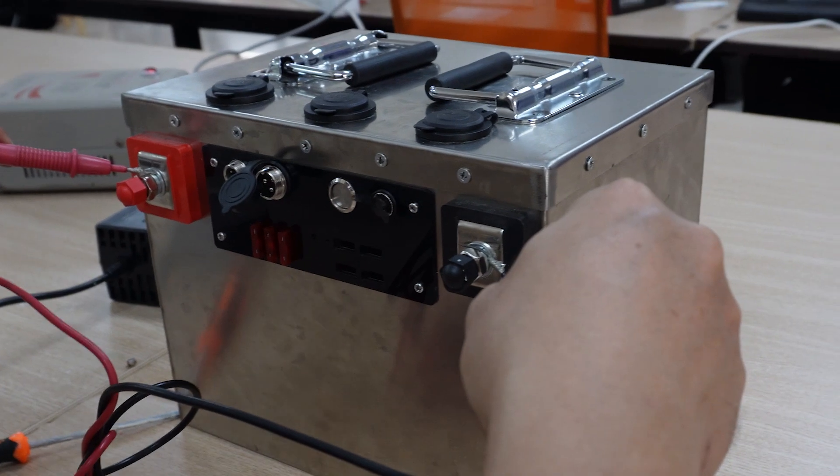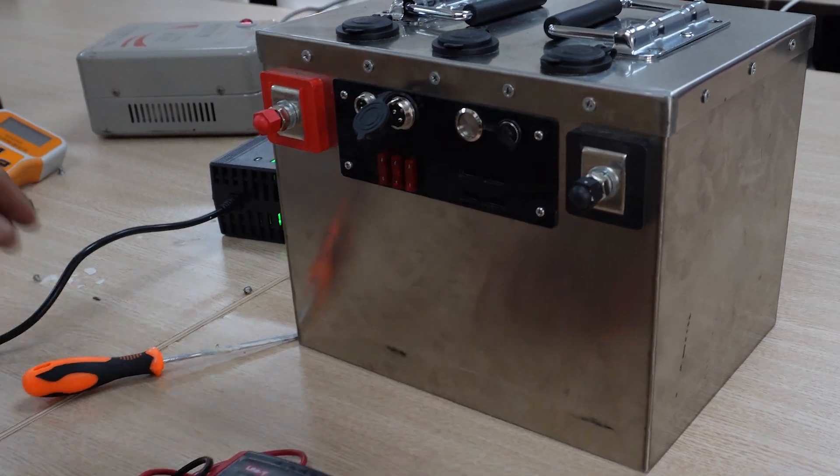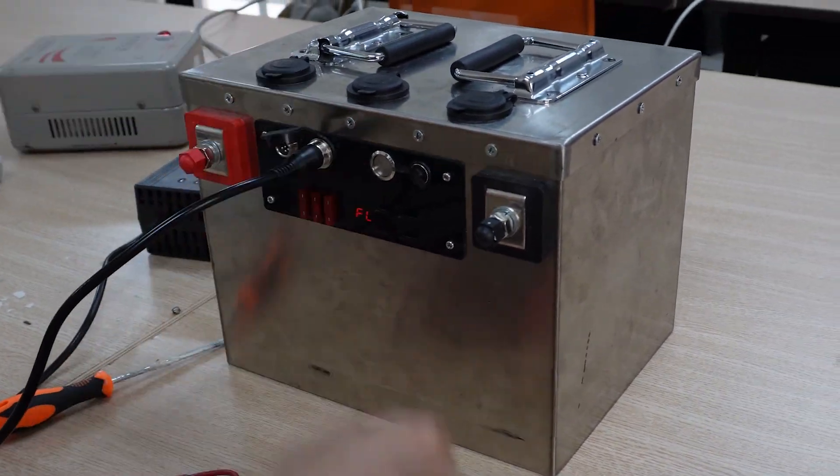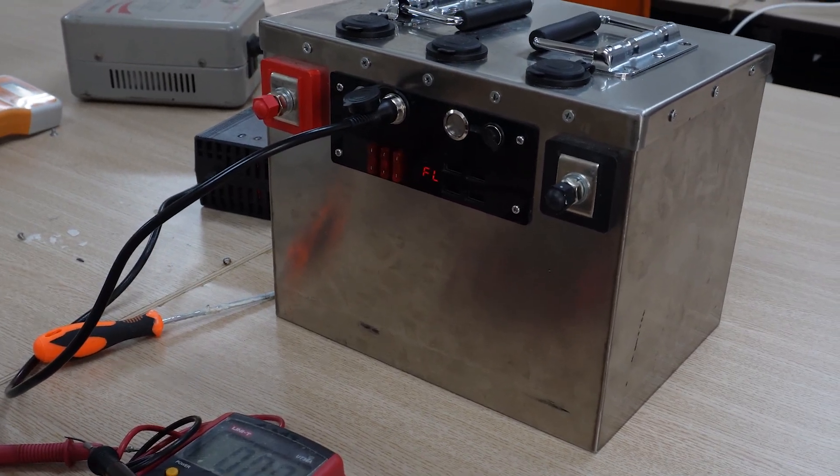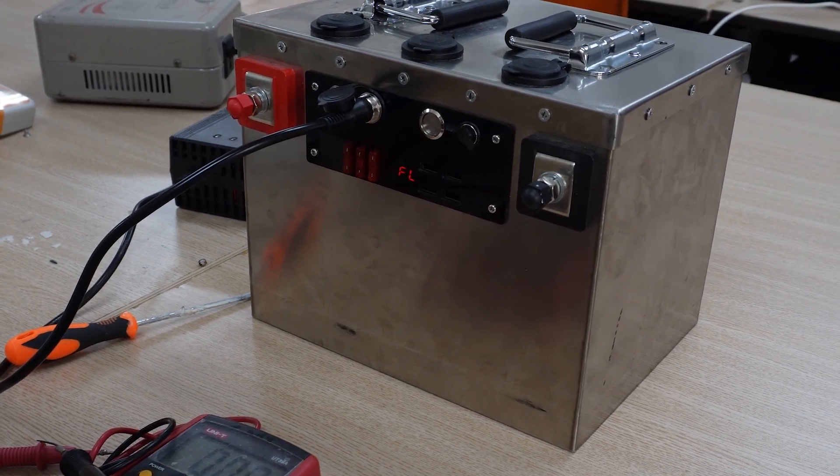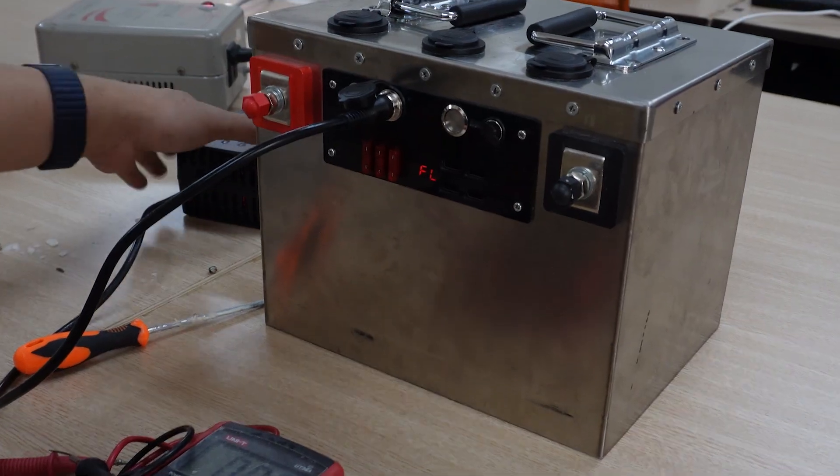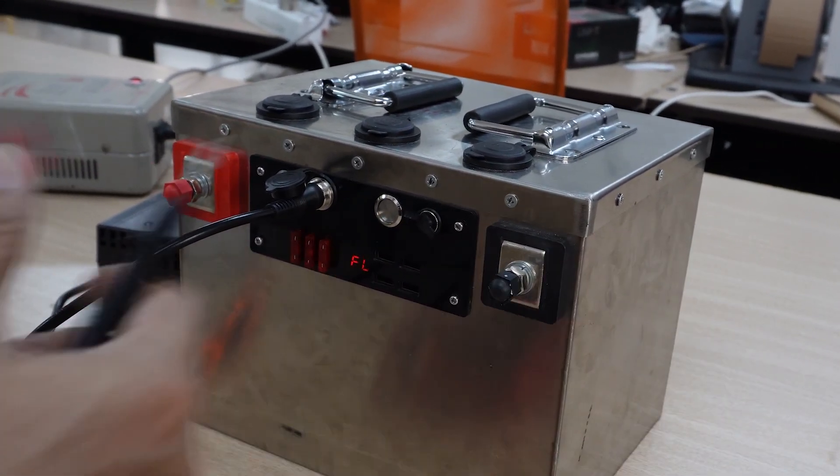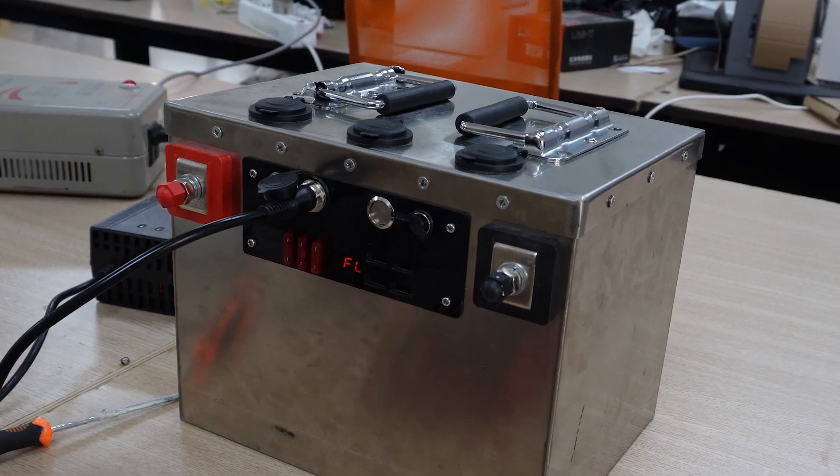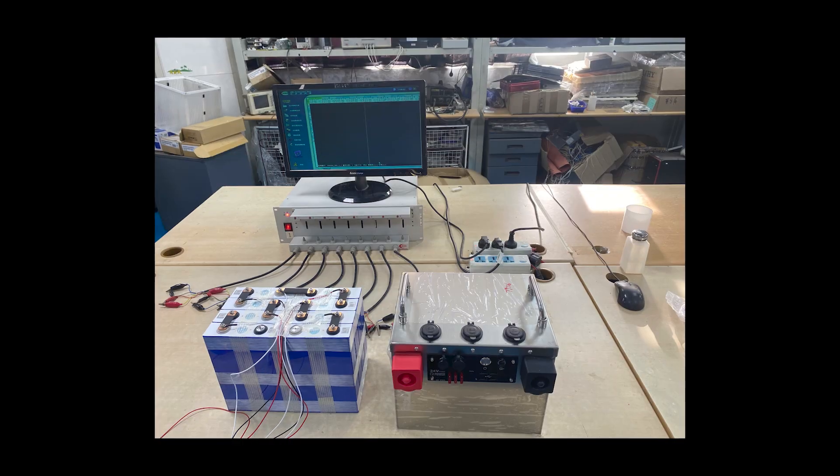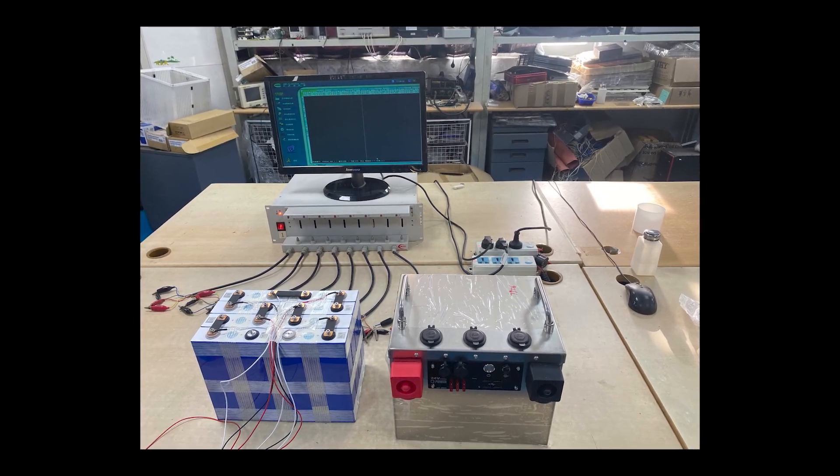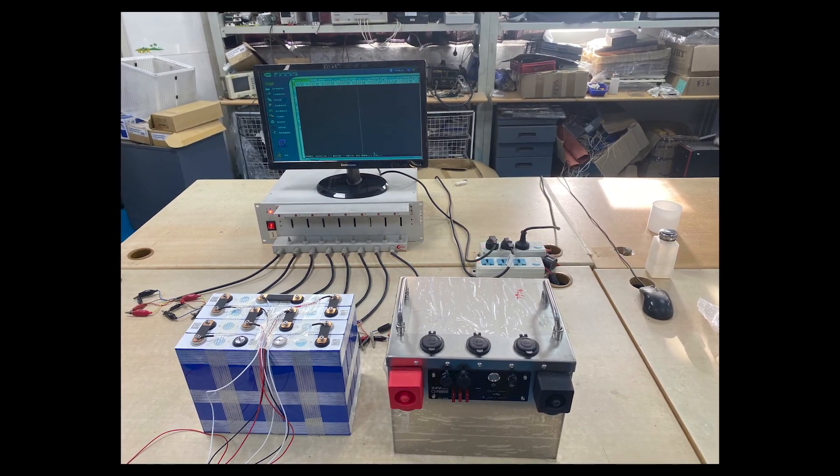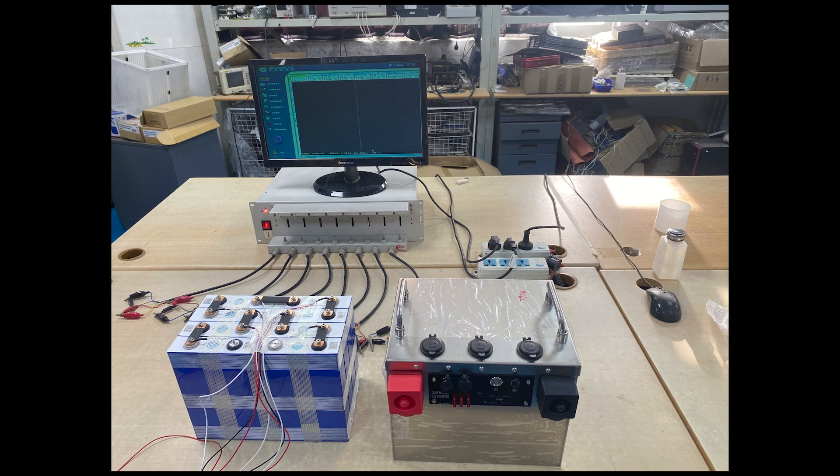To ensure that this battery, designed specifically for van life, would perform as expected in real-world use, I carried out extensive field testing and refinements. From initial trials to long-term durability evaluations, every aspect was thoroughly examined and optimized. This was not just to validate system stability, but to ensure optimal performance across a wide range of van life scenarios. During the initial testing phase, I used an electronic load tester to perform constant current and constant power discharges, verifying whether the voltage remains stable under varying loads.